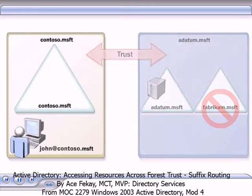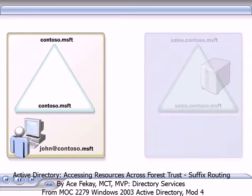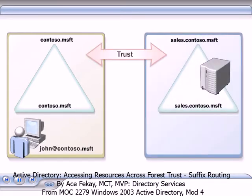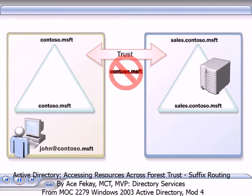If a company implements Active Directory in multiple forests but uses the same root domain name, a UPN suffix collision will occur. As a result, no routing of the UPN suffix contoso.msft will occur across the forest trust, and users will not be able to access resources from the other forest.